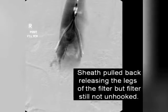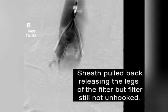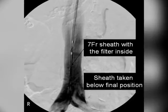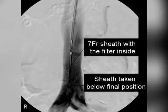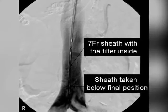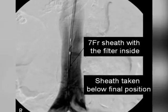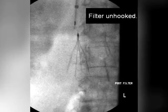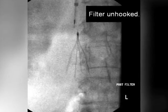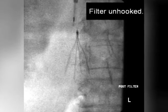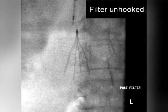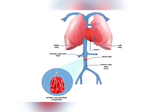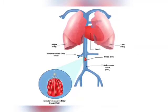Why may I need an inferior vena cava filter placement? You might need an IVC filter if you have DVT, deep venous thrombosis, or a pulmonary embolism, or have had either of those in the past. You might also need an IVC filter if you have a high risk of getting DVT. Anything that slows the movement of blood through your veins increases your risk of DVT.